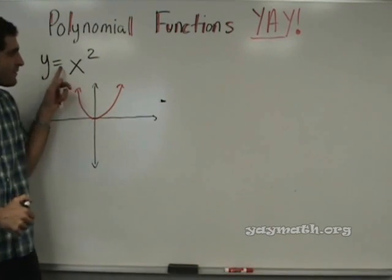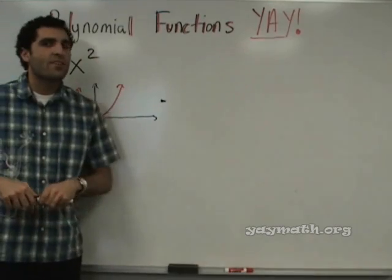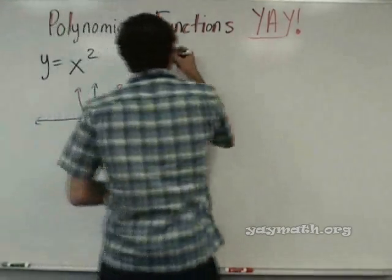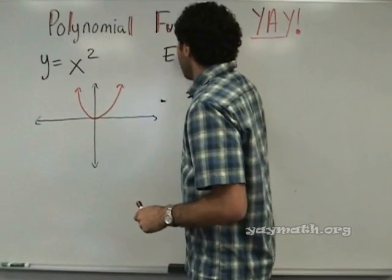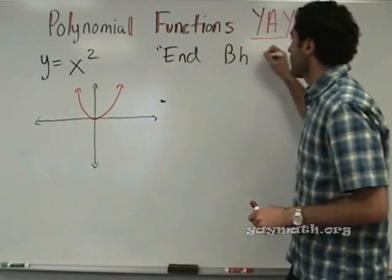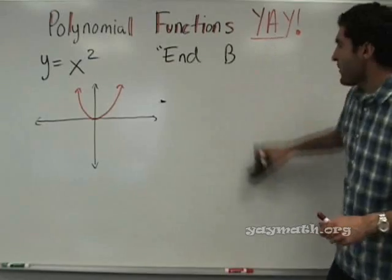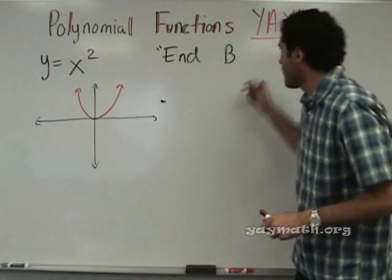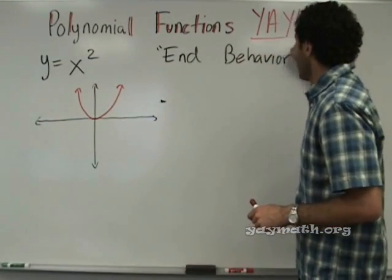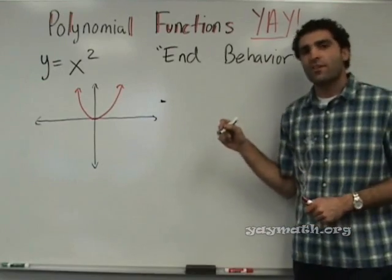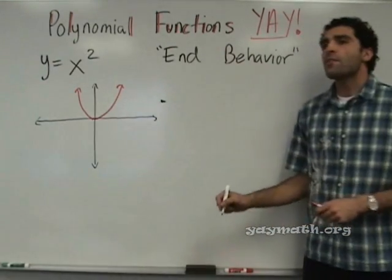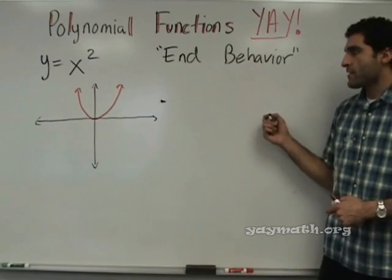Any other questions about that? This is a second degree function. Even if it had plus x or plus 9 or whatever, it's still a second degree function because of the biggest power. So second degree, third degree, and on and on. Now that we've defined the term, let's look at this. We are going to describe what's called the end behavior.